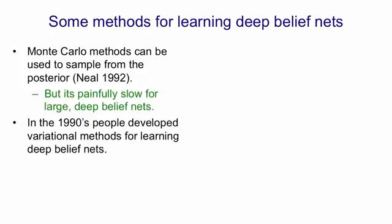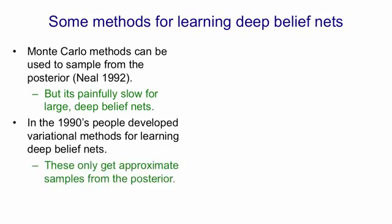In the 1990s, people developed much faster methods for learning deep belief nets, which were called variational methods. In fact, this is where variational methods came from, at least for the artificial intelligence community. The variational methods give up on getting unbiased samples from the posterior.